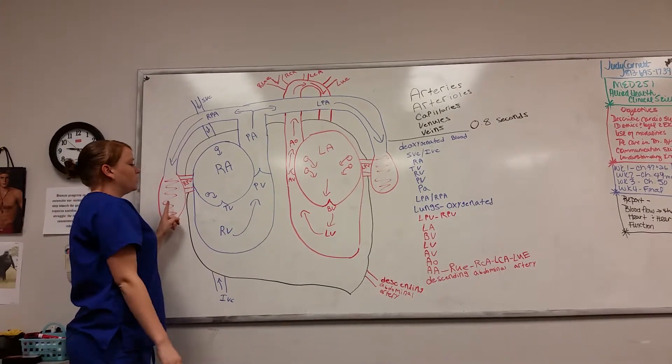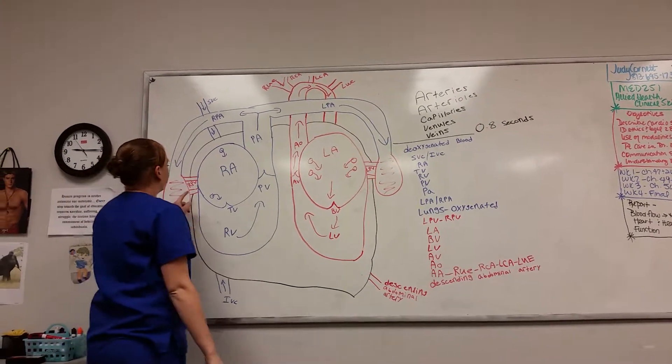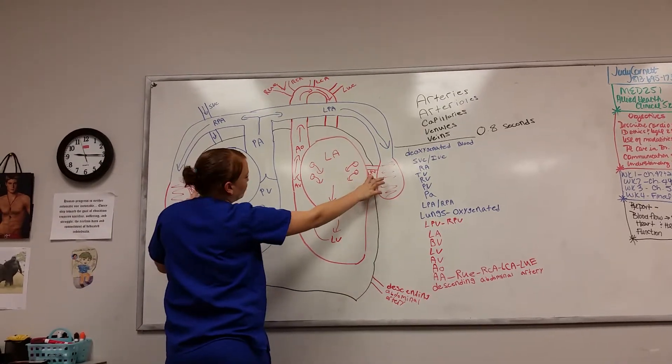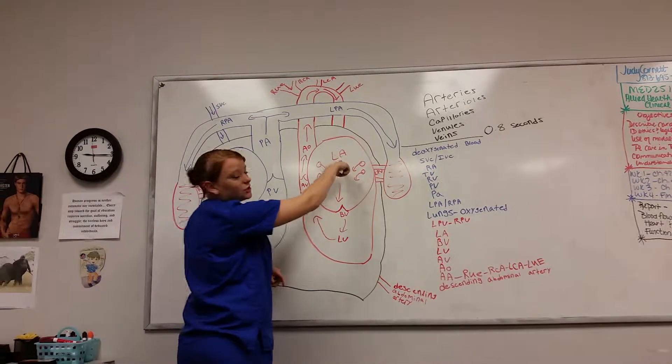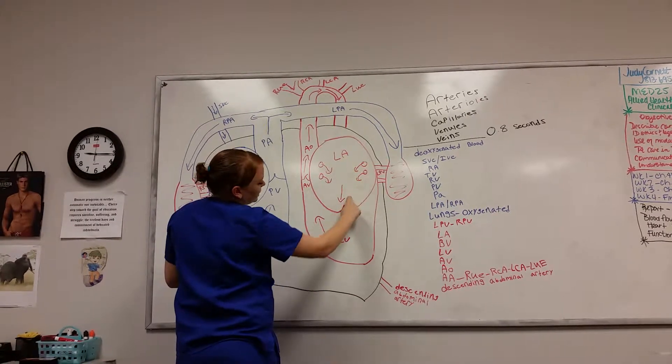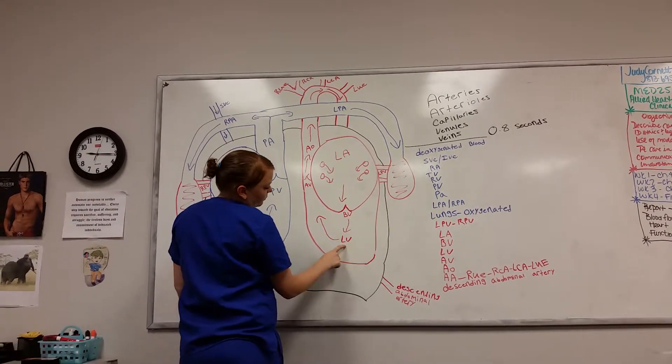Then the blood is oxygenated. Through the right pulmonary vein and left pulmonary vein behind the heart to the left atrium. And then it goes into the bicuspid valve to the left ventricle.